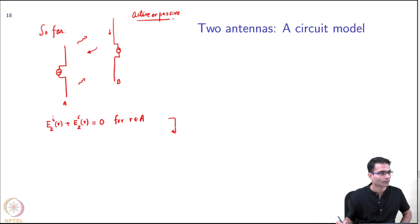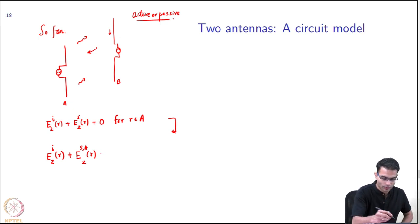How will this boundary condition get modified? If I ask you what are the fields at any point on A, you will have E_z^i, that is always there - that is the field produced by the voltage source. Then you have the self field. So far this is what I had in the single antenna case.